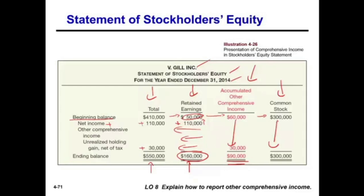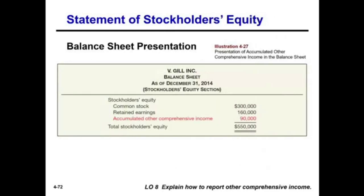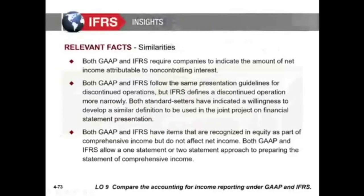An important point: accumulated other comprehensive income is cumulative. It was 60 and increased by 30, so accumulated OCI is an equity account — it goes on the balance sheet under stockholders' equity alongside common stock and retained earnings. We don't close it from year to year; the balance stays and accumulates. That's what we mean by accumulated other comprehensive income.